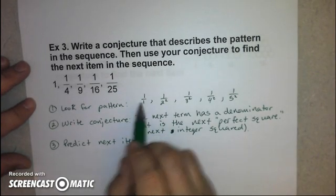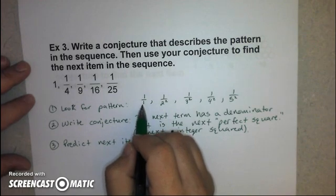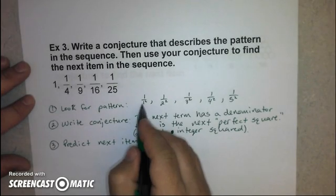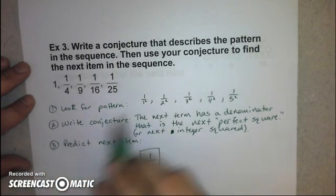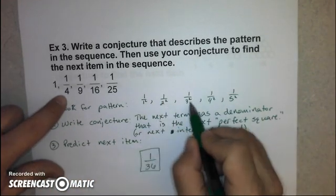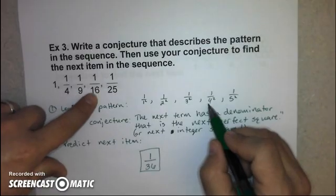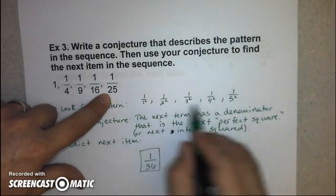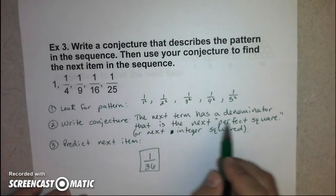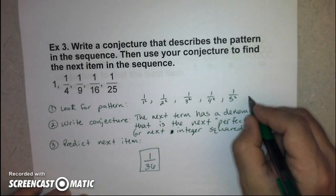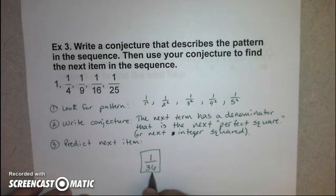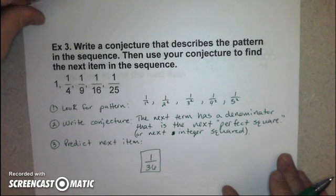If you need more time, go ahead and pause the video. Otherwise, these are the answers here. The pattern you should notice is one even can be written as a fraction, one over one. And that denominator is the perfect square. You could even write it as one squared. The rest of these, two squared is four, three squared is nine, four squared is 16, five squared is 25. And so the pattern is that the next term has a denominator that is the next perfect square or next integer squared. So the next item in your pattern would be one over six squared, which is one over 36.